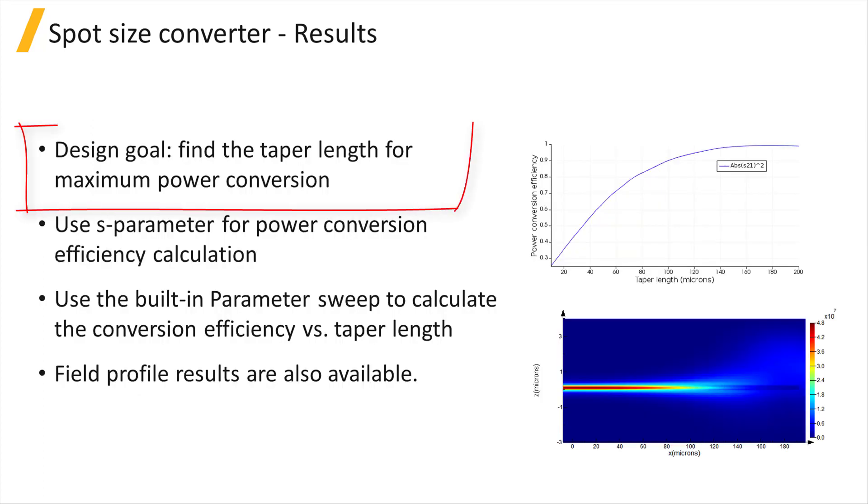The design goal of the spot size converter is to find the taper length that maximizes the power conversion efficiency from the fundamental mode of the SI waveguide to the fundamental TE mode of the Sion waveguide.